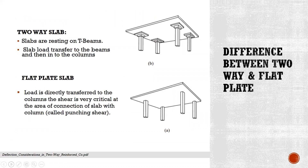Difference between two-way slabs and flat plates. In two-way slabs, the slabs rest on beams; loads are transferred from the slabs to the beams and then into the columns. In a flat plate system, the slab load is transferred directly to the columns. The shear is very critical at the area of connection of the slab with the column.